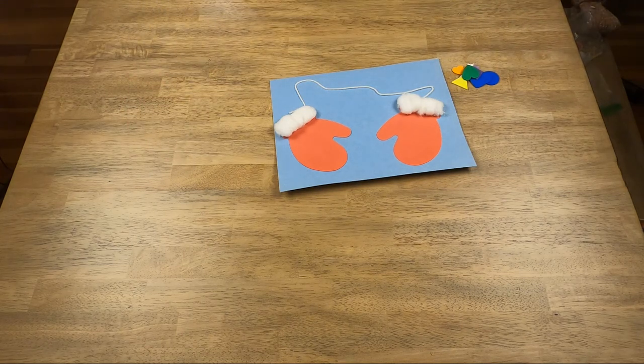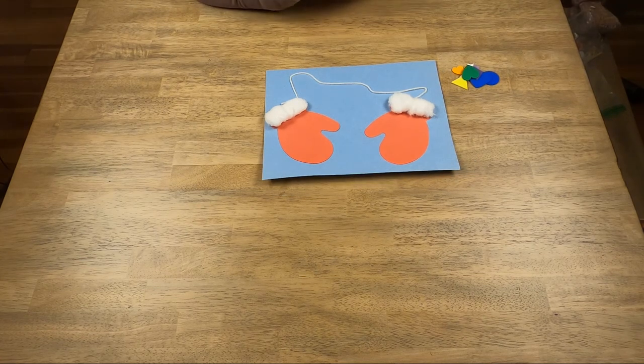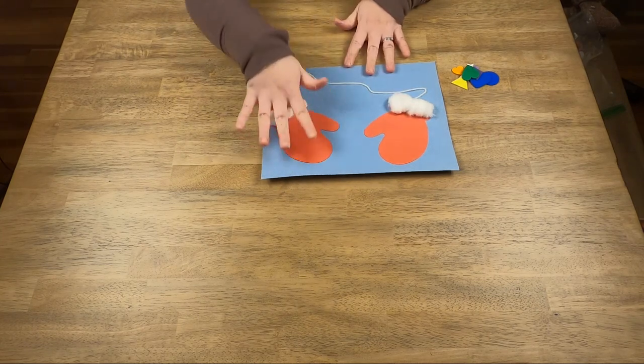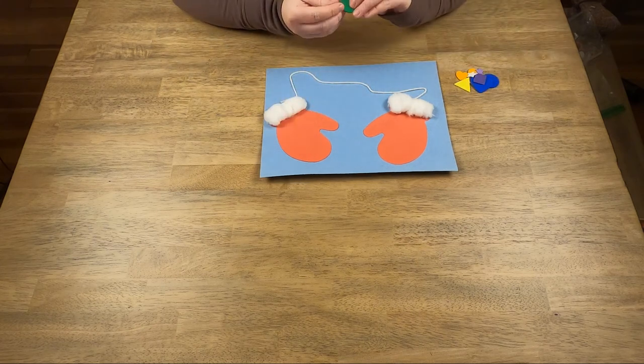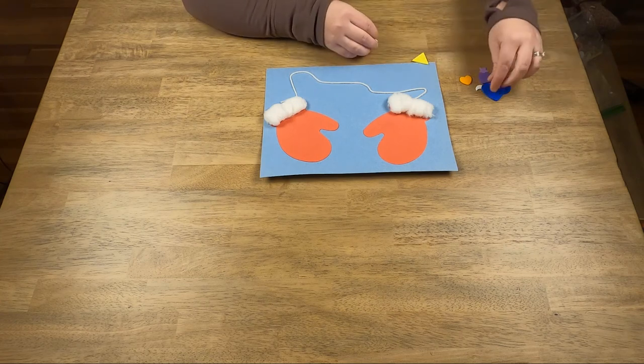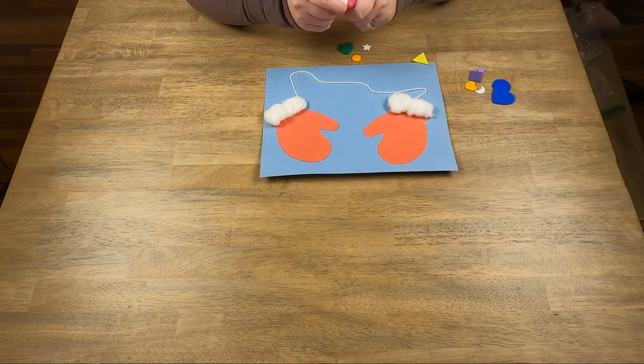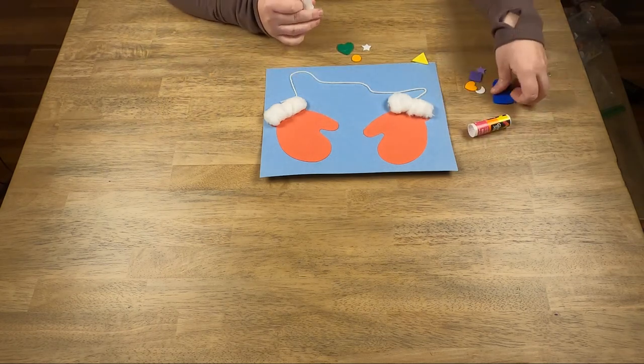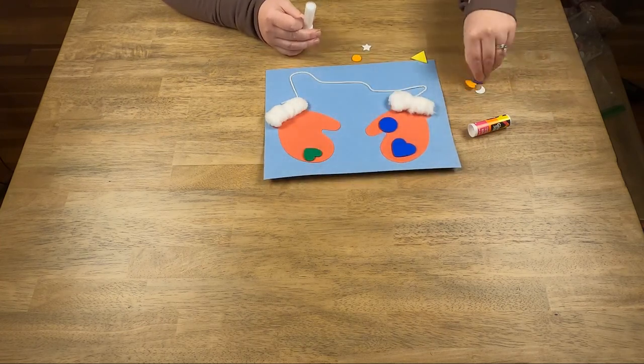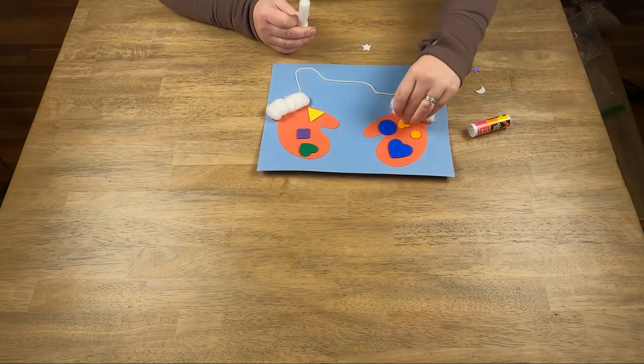The last thing I'm gonna do is decorate. Now you guys can decorate your mittens any way you'd like. There are crayons also in your bag, so feel free to take out those crayons and color your mittens. Or we have these really cute foam pieces. Some of them have stick-on sides. Actually none of these ones do, so I'm gonna use my glue stick again and glue these pieces onto my mitten in any design that I like.